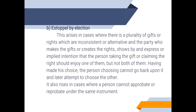The next is Estoppel by election. This arises in cases where there is a choice of gifts or rights which are inconsistent or alternative, and the party who makes the gifts or creates the rights shows by an express or implied intention that the person taking the gift or claiming the rights should enjoy one of them but not both. Having made his choice, the person choosing cannot go back upon it and later attempt to choose the other. It also arises in cases where a person cannot approbate and reprobate under the same instrument.